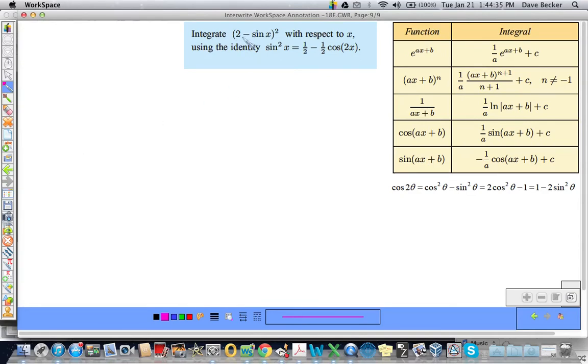Integrate 2 minus sine X squared with respect to X using the identity sine squared X equals blah, blah, blah, blah, blah. Because we're going to get into a little trouble here. Okay? So we're going to do the integral of 2 minus sine X squared. And it looks like it might be a power function, but it's not because of the sine. So we're going to have to expand that. That equals the integral of 4 minus 4 sine X plus sine squared X dx. This is integratable. This is integratable. Here we're in trouble.